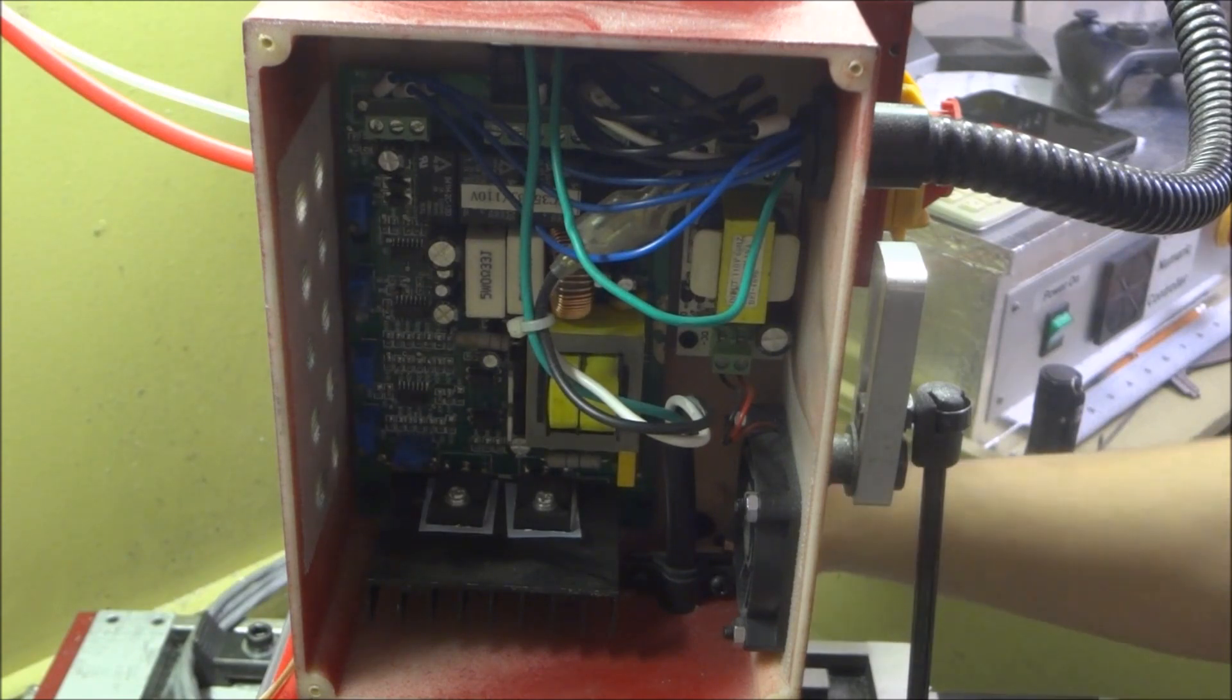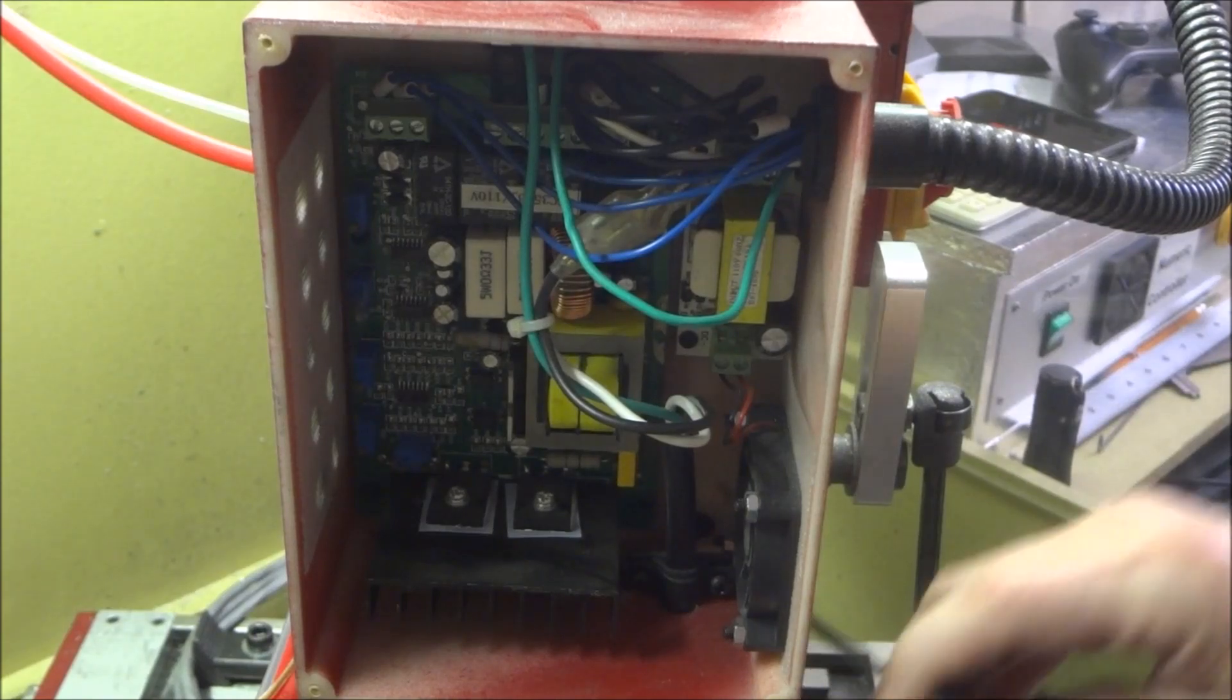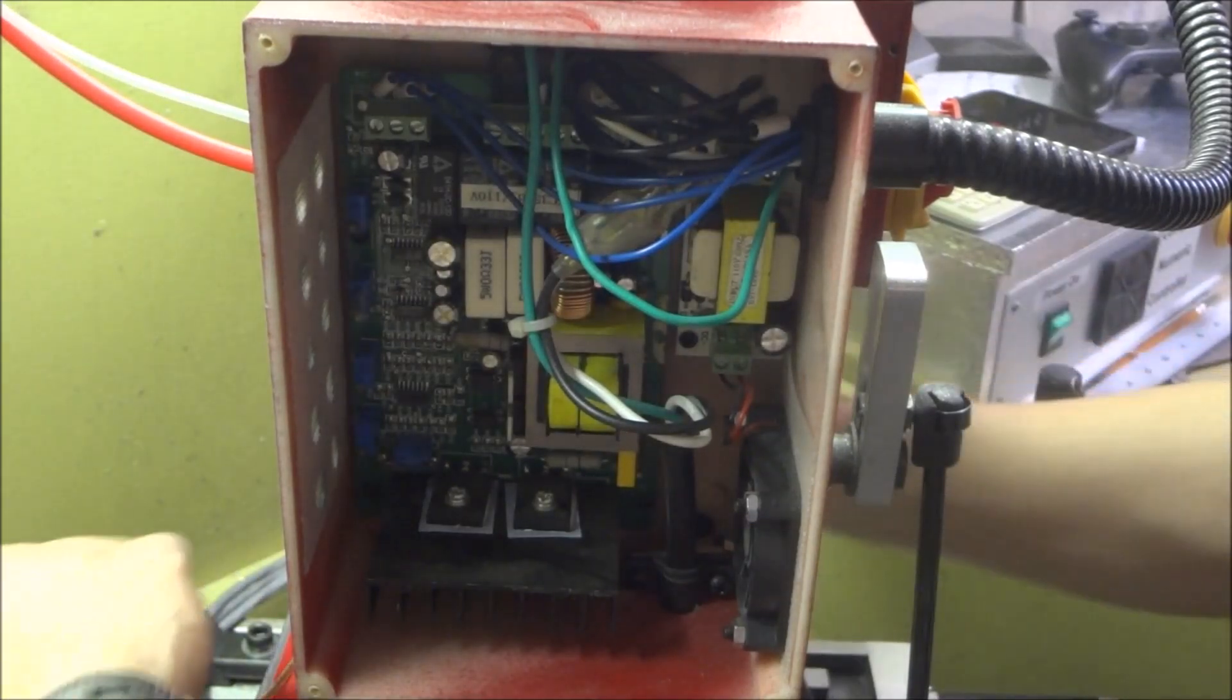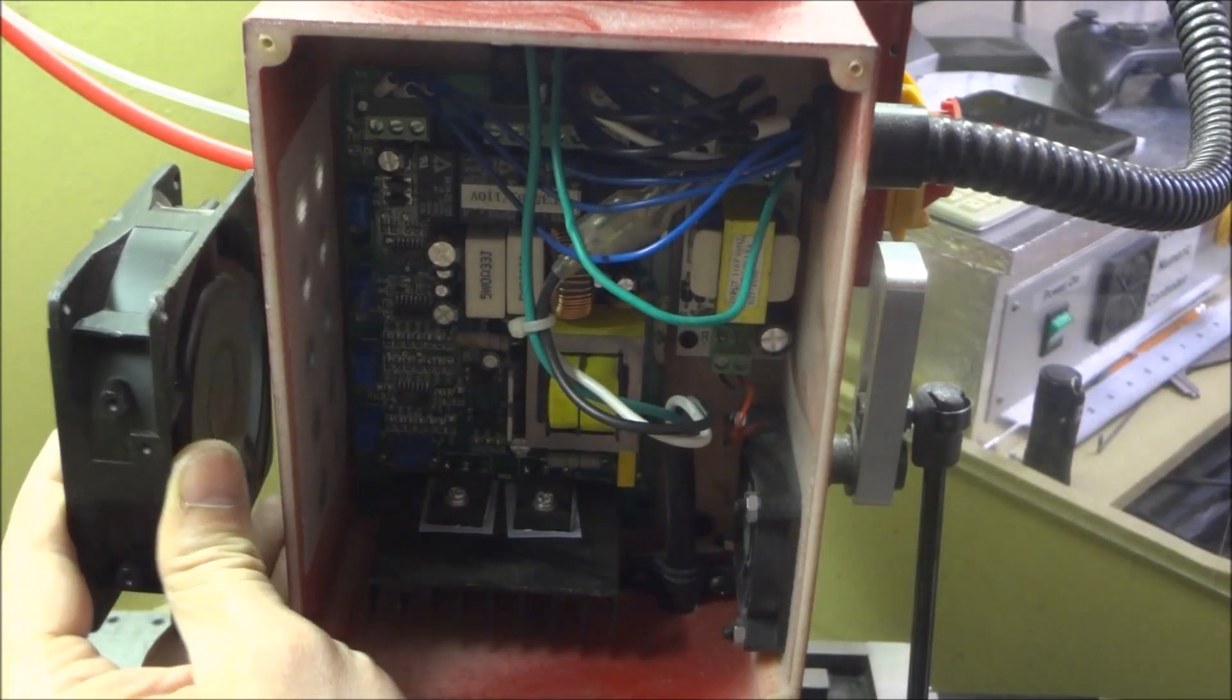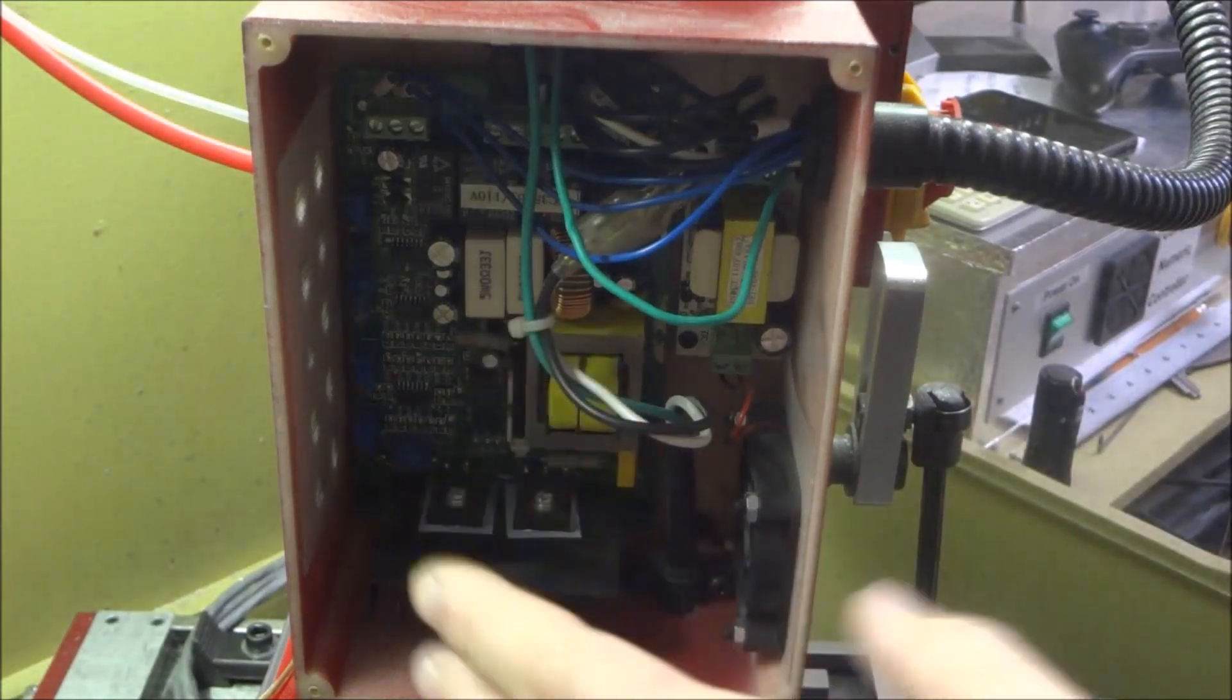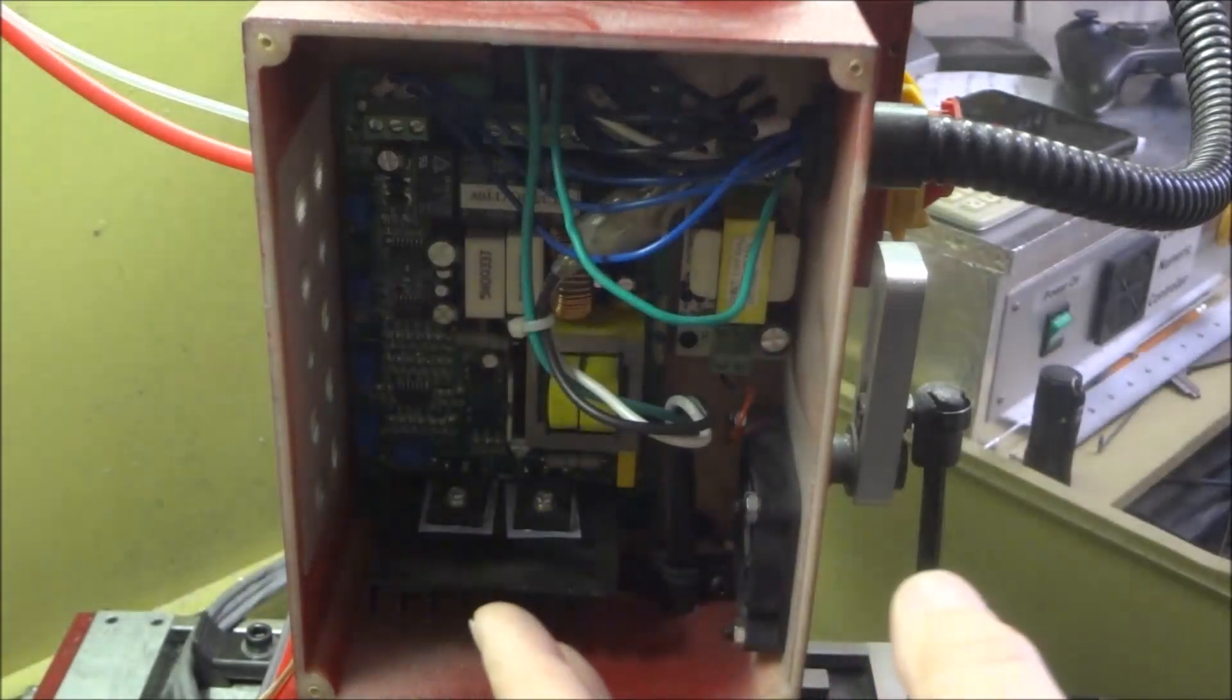In the meantime I just had this 110 volt fan just kind of mounted to the side over here, and it was just sucking air through there to keep it cool because the DC control board in here does get hot, and I have had the mill shut down before because it got overheated.